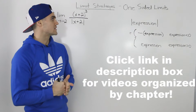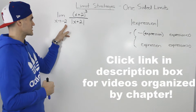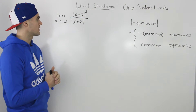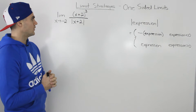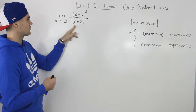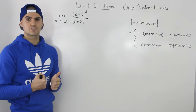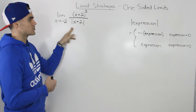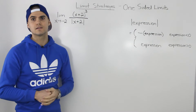Moving on to the next example for one-sided limits, we have to find the limit as x approaches negative 2 of x plus 2 to the power of 3, all over the absolute value of x plus 2. Notice how we can't make a direct substitution because if we sub in negative 2 for x, this denominator is going to be 0. So we have to use a different strategy, and because of this absolute value in the expression, we can be pretty confident that we have to use the one-sided limit strategy.